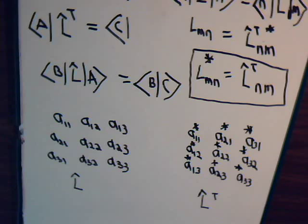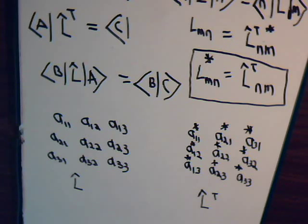Hopefully that made some sense. What we want to do in the next video is talk about a special type of adjoint — the Hermitian adjoint. So come back and join us for that video, and we'll continue our discussion.